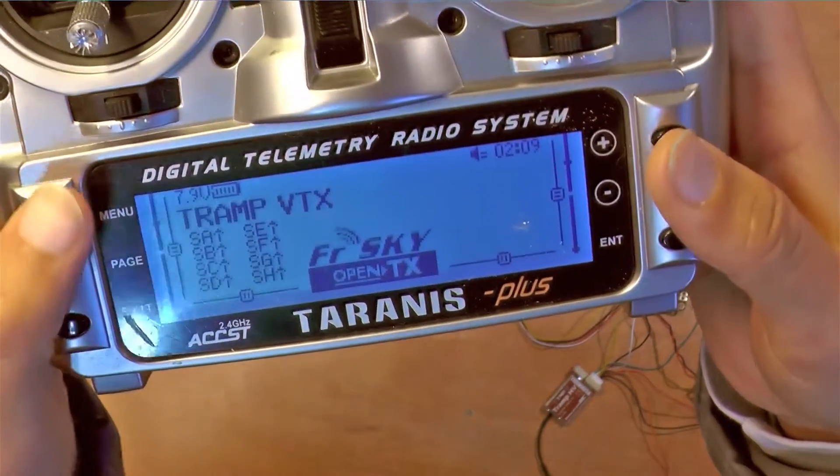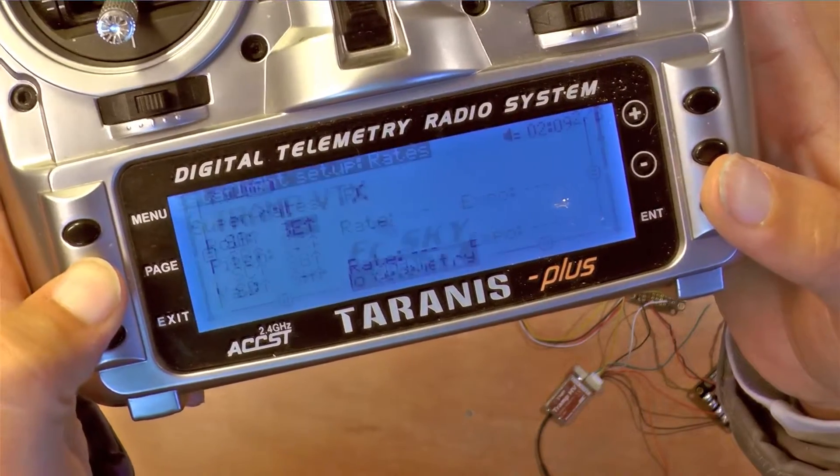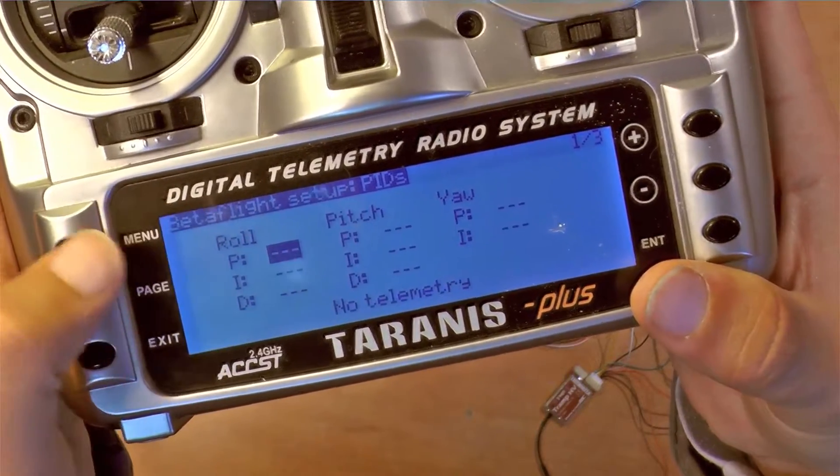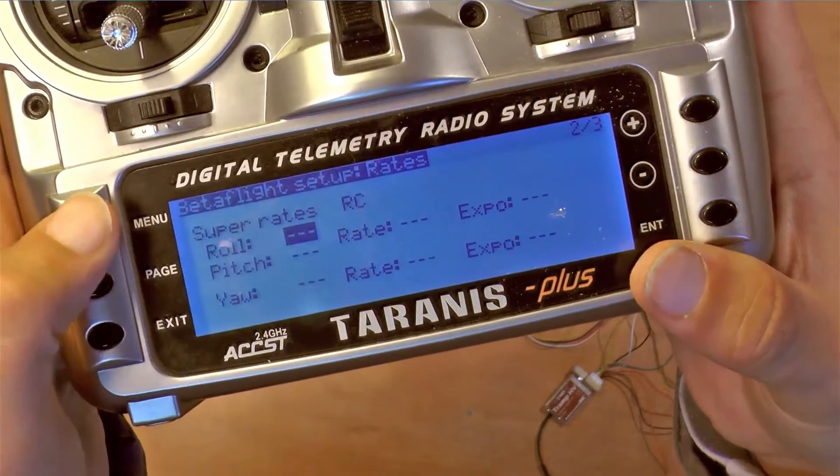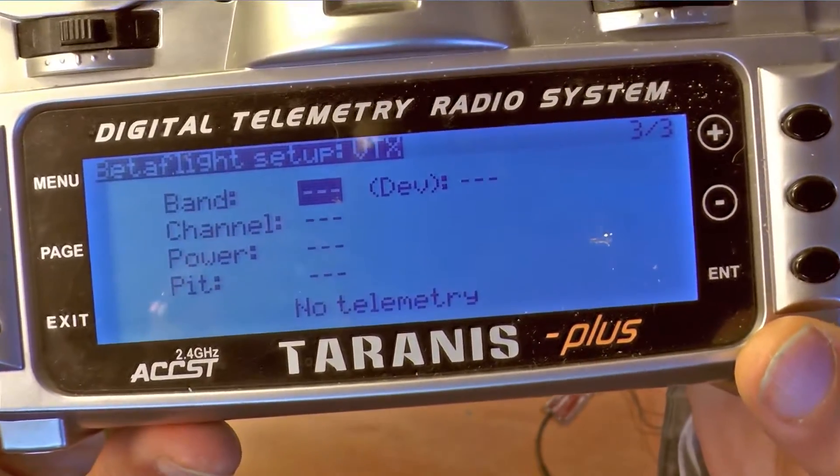It could be loaded by going to the main screen and long press the page button and then you can see first page is for PID, second page is for rates and the third page is dedicated for VTX settings.